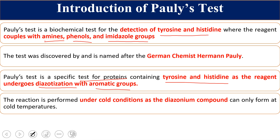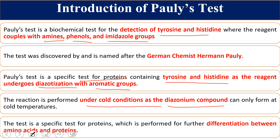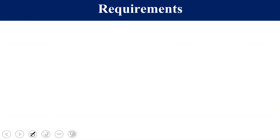One specific characteristic feature of this test is that diazotized sulfanilic acid couples with amines, phenols, or imidazole groups and gives us a colored compound. This colored reaction takes place under cold conditions only, because the diazonium compound can only form at lower temperatures. That is why this reaction is carried out with ice-cold reagents. The reagent requires 1% sulfanilic acid (chilled), 10% HCl, and 5% sodium nitrite (also chilled).